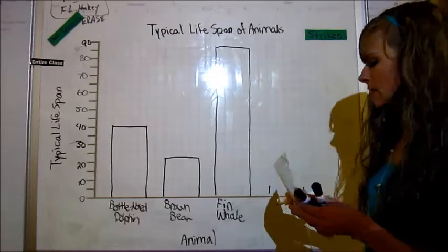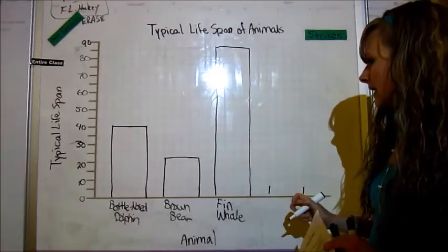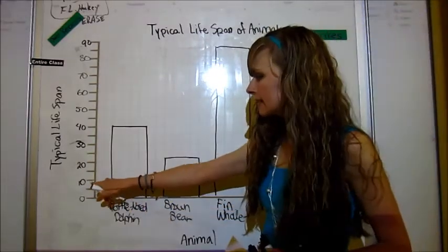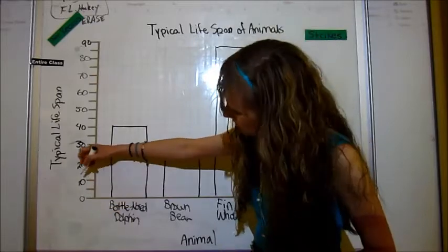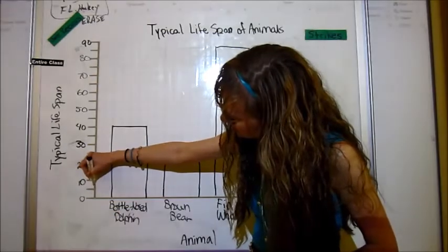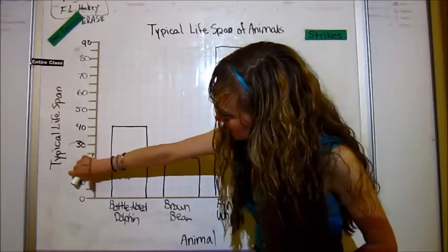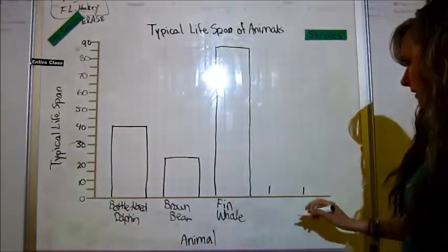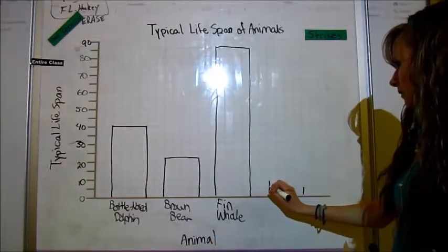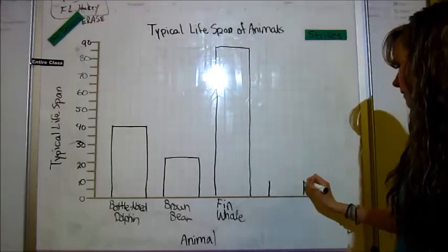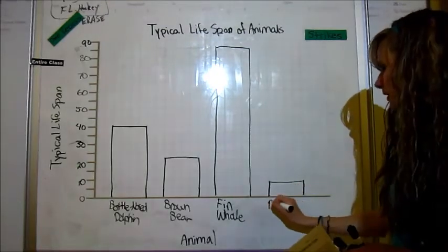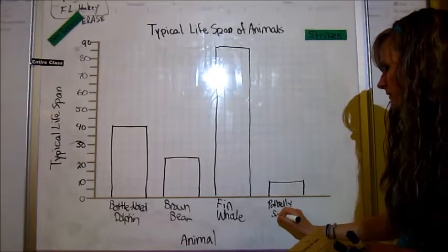And then the potbelly seahorse only lives eight years. So here's 10, here's five. So we just imagine five, six, seven, eight, nine. So it's just slightly above half on this second line here. So we would put it right about here. And this is potbelly seahorse.